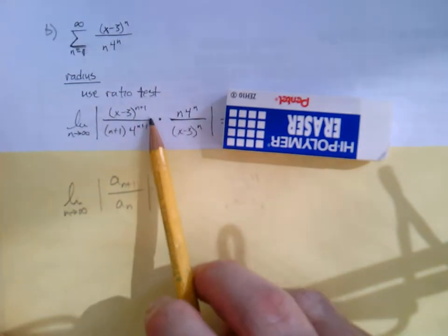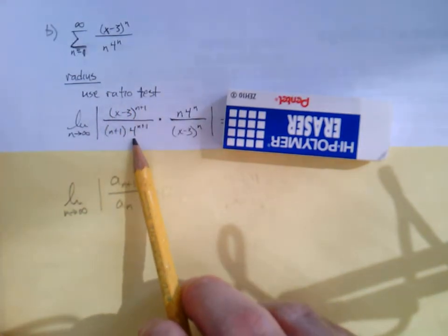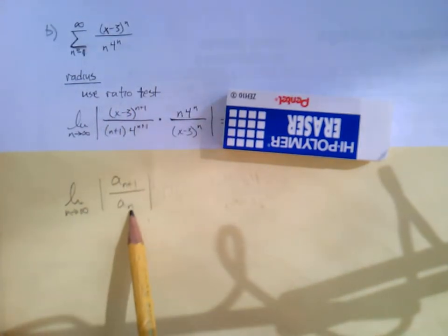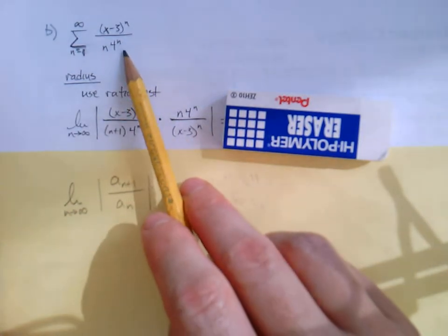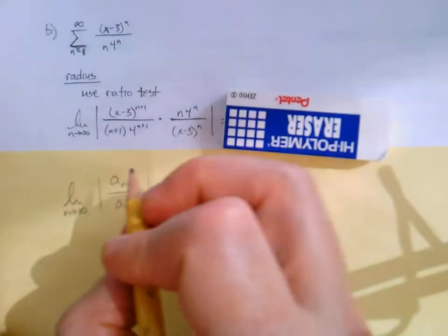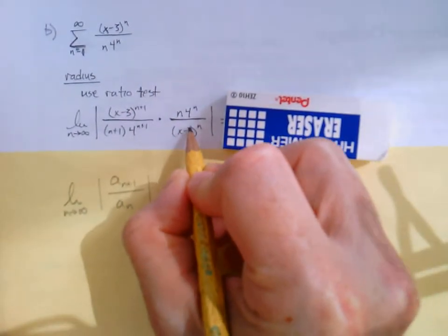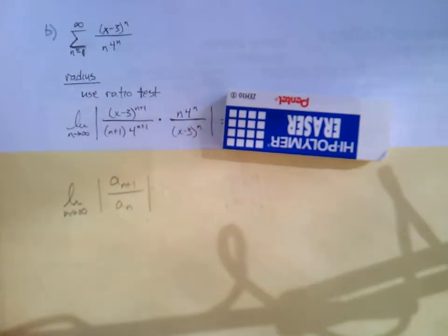Of course, we have a fraction. So here's the n plus 1th term replacing the n's with n plus 1. And when we divide it by a sub n, well, we're going to do the reciprocal and multiply just like we would in a ratio test. And it turns out the results of the ratio test are going to lead us straight to the radius of convergence. So let's see it. Let's see these things simplify.